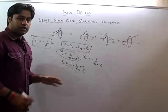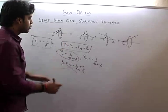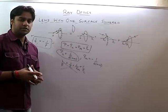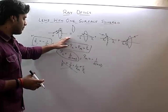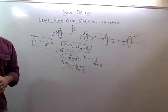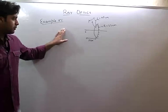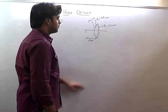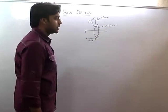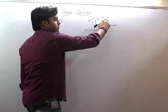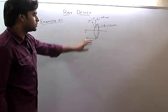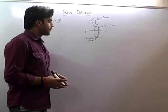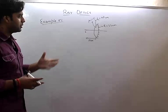Now let us do example 51. There is a convex lens with its back surface silvered. The radius of that silvered surface is 22 cm, the focal length of the lens is 20 cm, and μ = 1.5. An object is placed 10 cm from the lens. We need to find where the image will be formed and whether it is real and inverted.